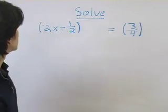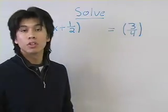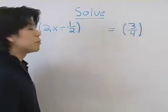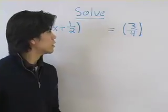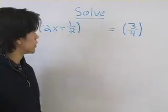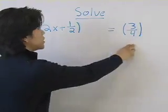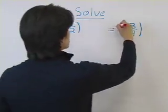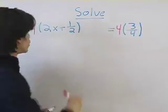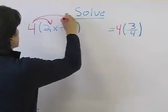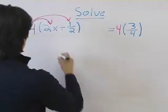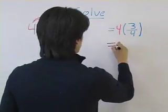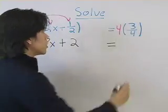We're going to solve the equation 2x plus 1 half equals 3 fourths. In order to do so, we need to clear the equation of any fractions. So we find the lowest common denominator for 1 half and 3 fourths, which is 4. We multiply both sides by 4 according to the multiplication property of equality. Distributing this, we get 8x plus 2 equals 4 times 3 fourths, which is 3.